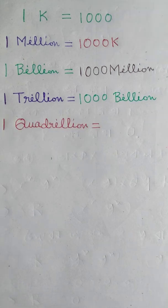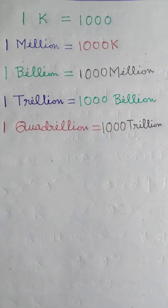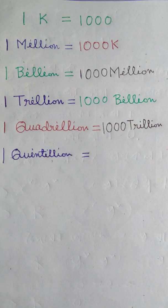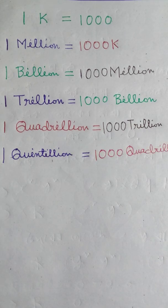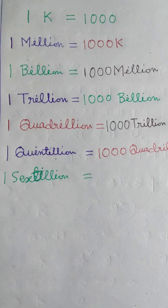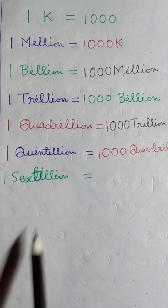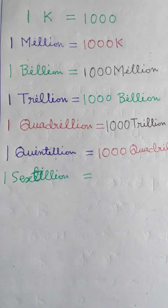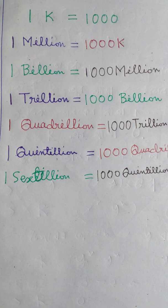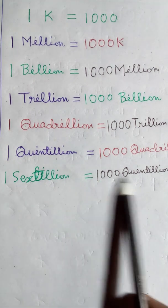One Quadrillion is equal to One Thousand Trillion. One Quintillion is equal to One Thousand Quadrillion. One Sextillion is equal to 1000 Quintillion.